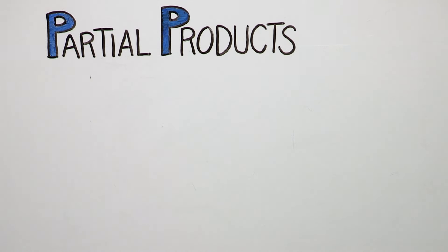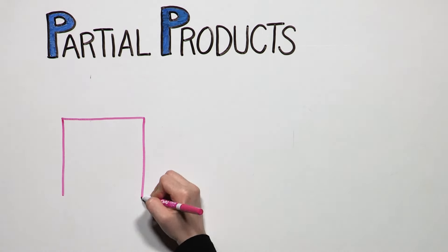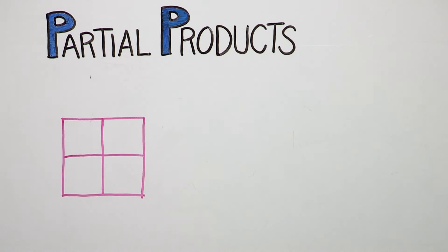When your child first learns to multiply two two-digit numbers, she will use the area model. This visual tool illustrates how to decompose numbers and find four different products.